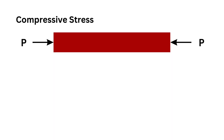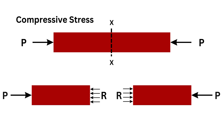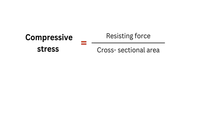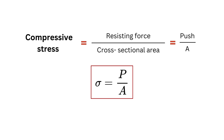Compressive stress is induced in a body when subjected to two equal and opposite pushes. Considering a section XX which divides the bar into two parts, for both parts, compressive force equals resisting force to attain equilibrium. Compressive stress equals resisting force divided by cross-sectional area, and since resisting force equals push, compressive stress equals push divided by cross-sectional area.